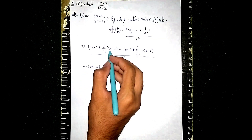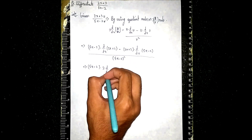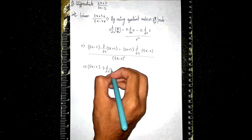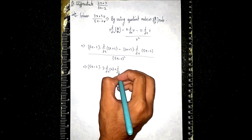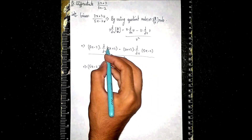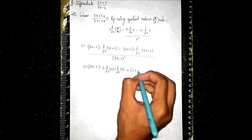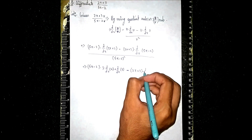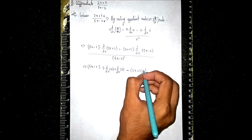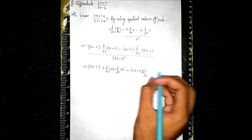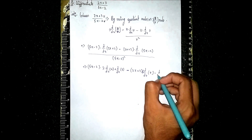Now we differentiate each part separately. For d/dx of (2x + 3): 2 comes outside, so we get 2 into d/dx of x, plus d/dx of 3. For d/dx of (5x - 2): we take 5 outside, giving 5 into d/dx of x, minus d/dx of 2.